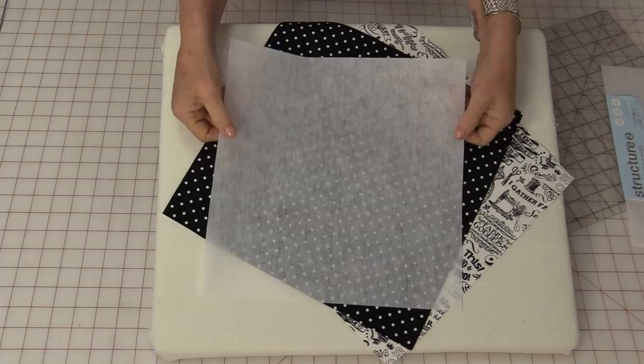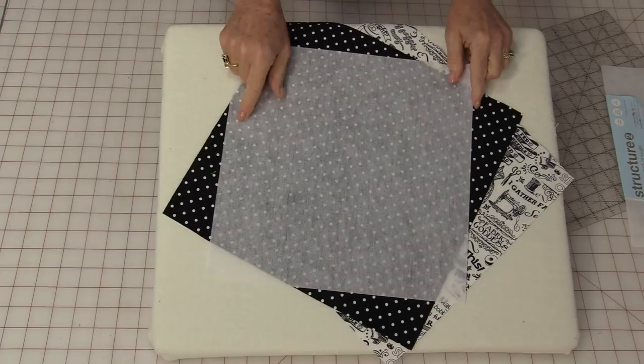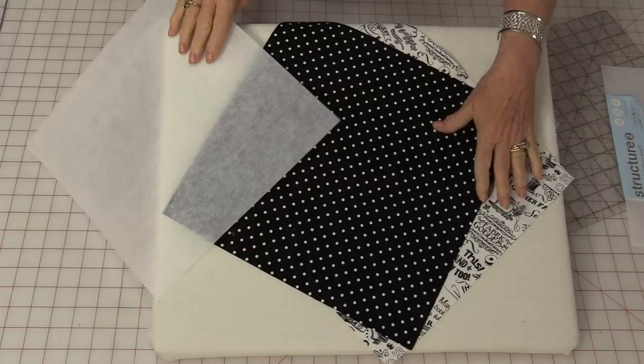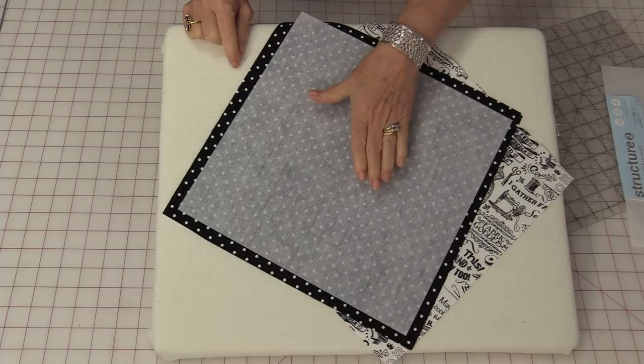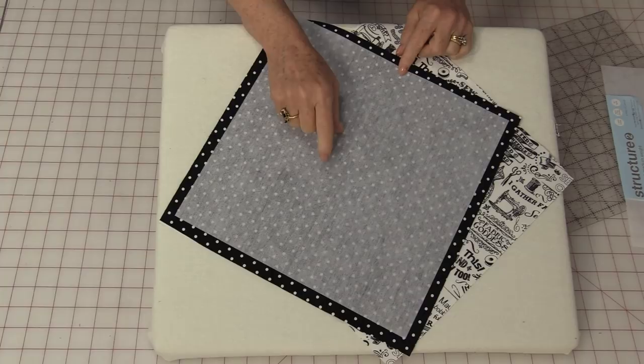Start with any size square of this interfacing. It really doesn't matter the size. This particular size is 11¾ inches because it was a leftover piece from a project. Two pieces of fabric and I want both the fabrics an inch bigger than this interfacing.